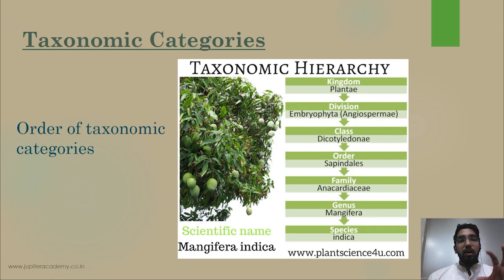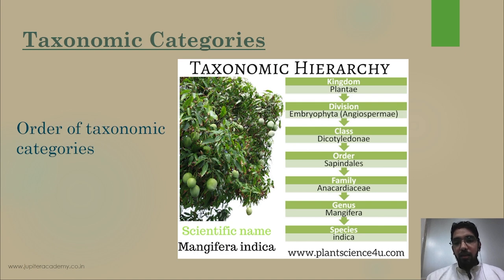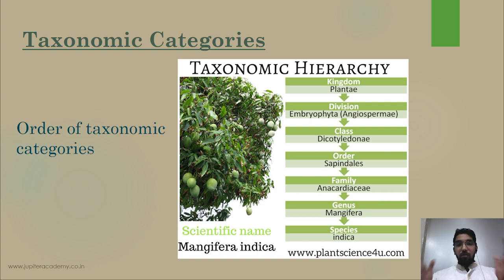Now we see all seven taxonomic categories using the example of Mangifera indica. The order of taxonomic categories is: kingdom at the top, then division — since this is a plant, there is division instead of phylum — division Embryophyta, then class, order, family, genus, and species. So the order is: kingdom, division, class, order, family, genus, species.